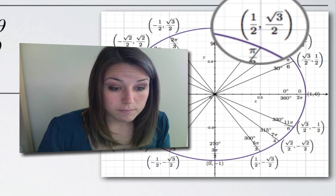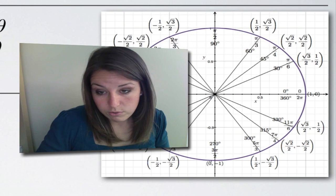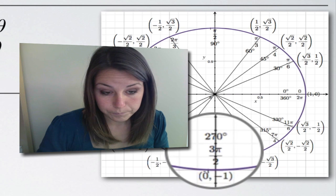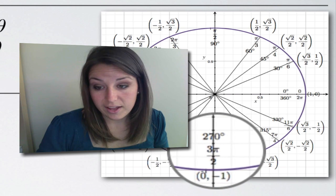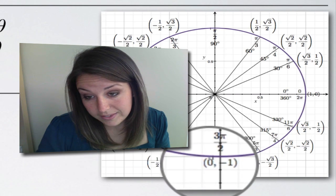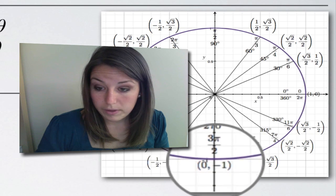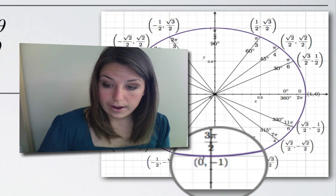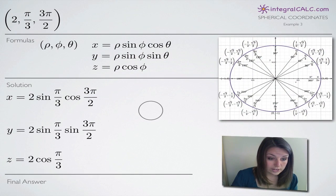We're also going to be looking at the angle 3 pi over 2. Continuing along our unit circle, we find 3 pi over 2. Cosine of this angle will be 0, the x-coordinate, and sine of this angle will be negative 1, the y-coordinate. Given those four values, let's head back over to our equations.